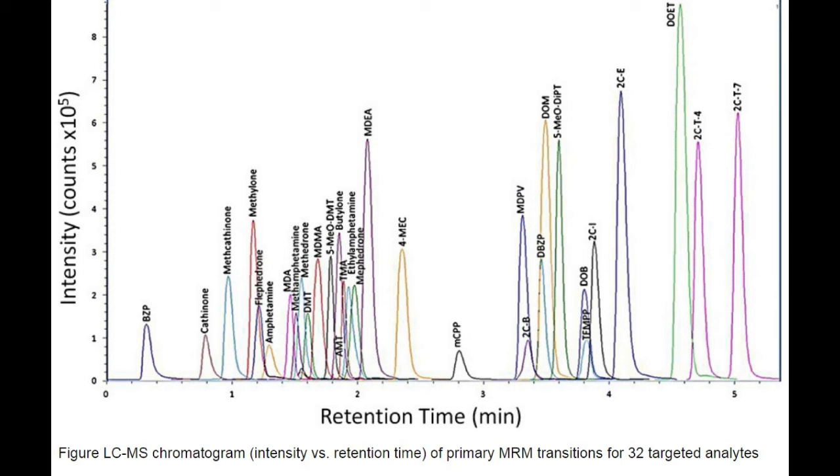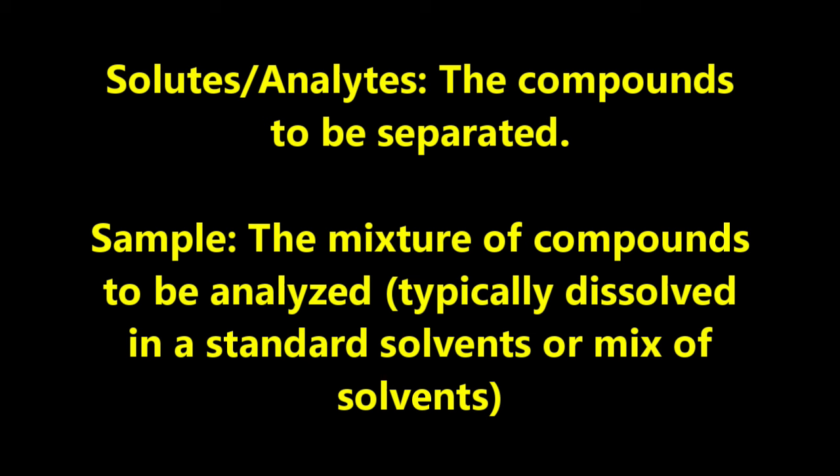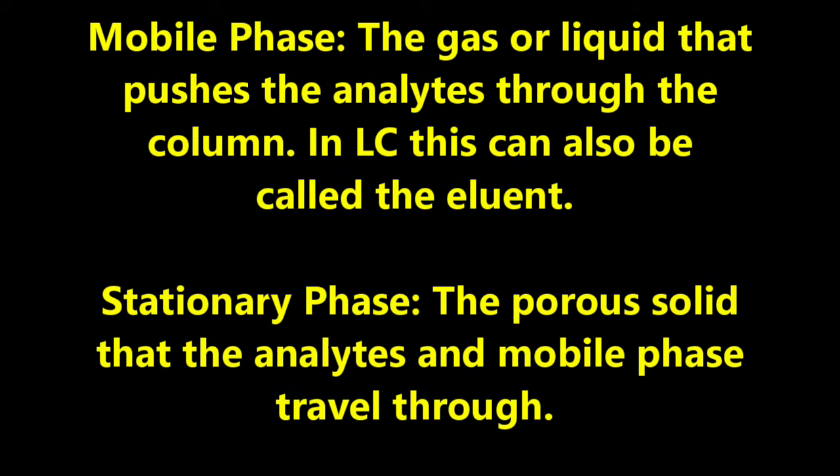Now that you have a basic idea of how this works, it's time to learn some chromatography jargon so that we can all sound like we're highly educated. The compounds to be separated are known as the solutes or analytes, and the mixture of them is generally called the sample. The gas or liquid that moves these solutes through the porous solid is known as the mobile phase or eluent, which sounds much cooler.